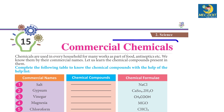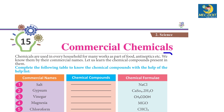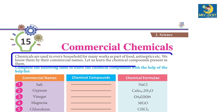Chapter 15: Commercial Chemicals. Chemicals are used in every household for many works as part of food, antiseptics, etc. We know them by their commercial names. Let us learn the chemical compounds present in them.